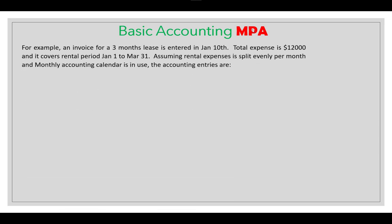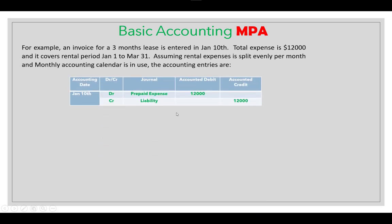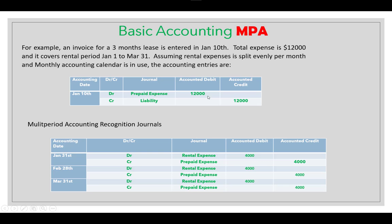For basic accounting of MBA: for example, a three-month lease invoice entered in January with total expenses of 12,000 covering January to March. The first journal will be between the prepaid expense account (accrual account) and the supplier liability account for the total amount: prepaid expense 12,000 debit, liability 12,000 credit. For each month from January to March, you need to run the multi-period accounting schedule process, which is a step in the payables period-close. Each month, the prepaid expense is reduced — 4,000 for January, 4,000 for February, and 4,000 for March.